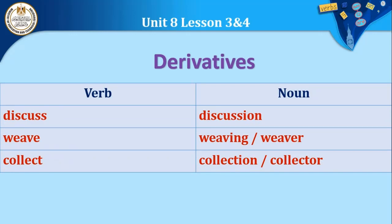Verb into noun — take the verb and convert it to a noun. For example: 'discuss' (verb) → 'discussion' (noun). For 'weave', we can add '-ing' to get 'weaving' (noun — the act), or add '-er' to get 'weaver' — the person who performs the action of weaving. Similarly: 'collect' → 'collection' (noun) or 'collector' — the person who collects.